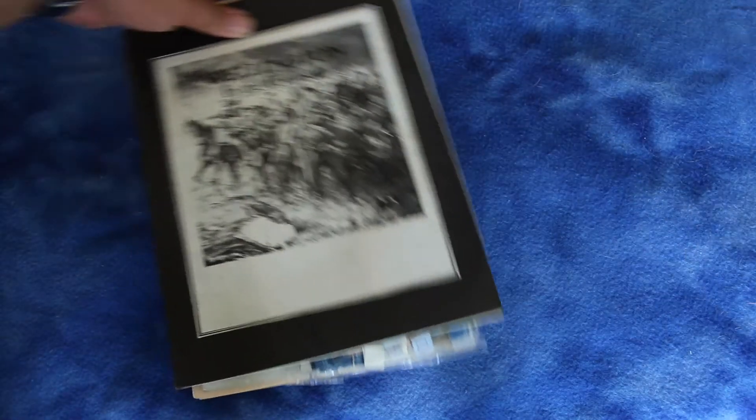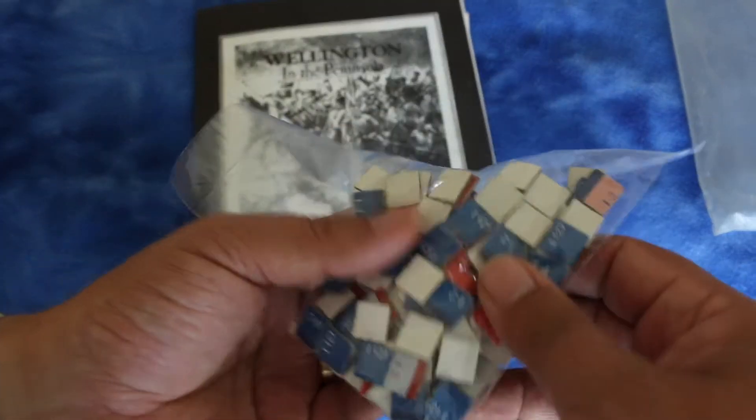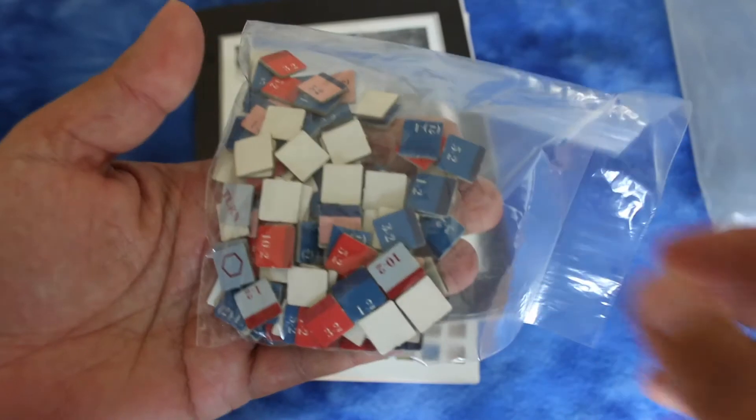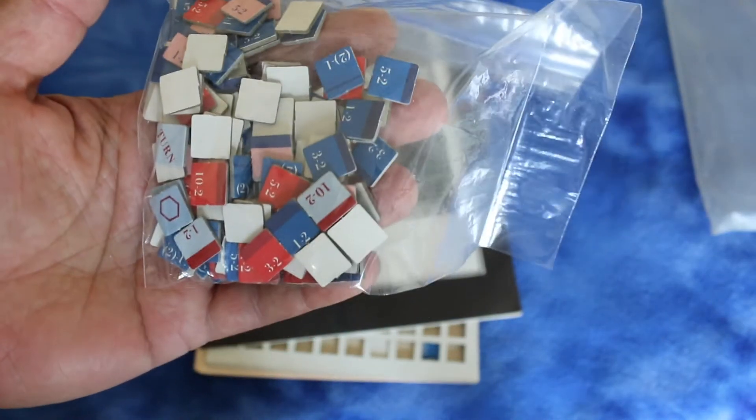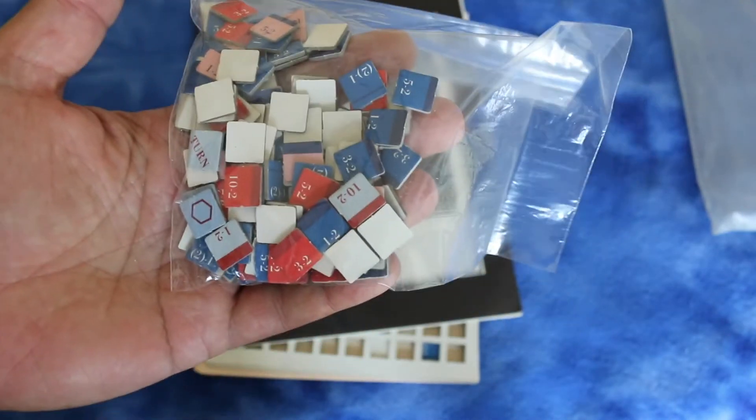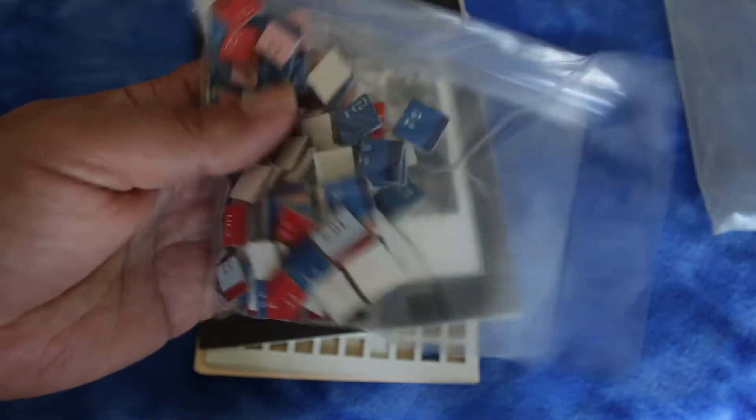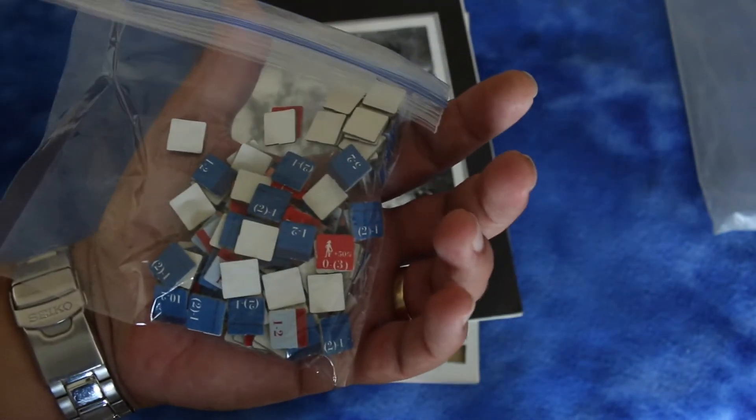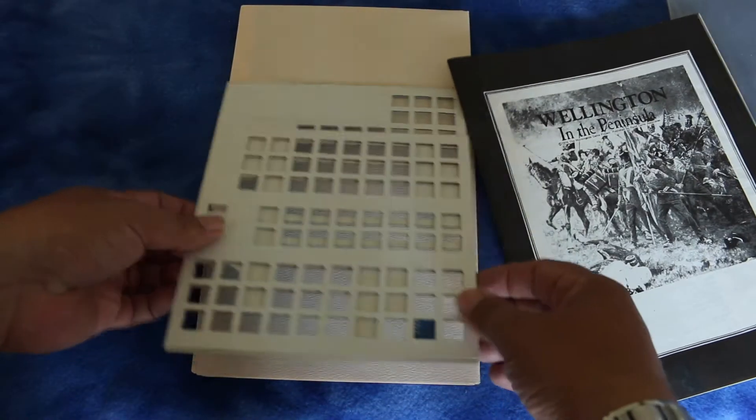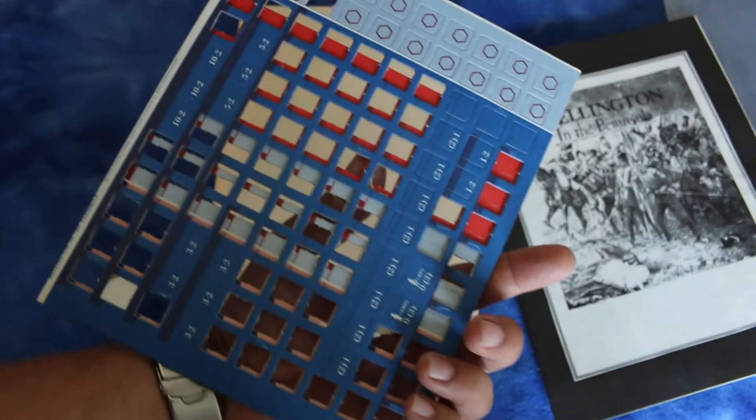Let's see what's in here. Got the counters here. The counters don't even have standard military symbols on them. These are pretty rudimentary counters. I'm sure they're functional though. Here are some that are unpunched.